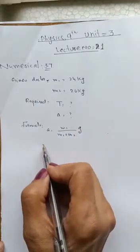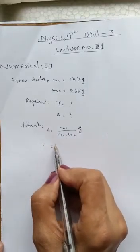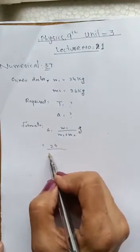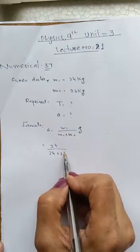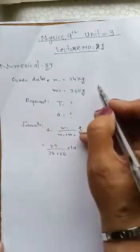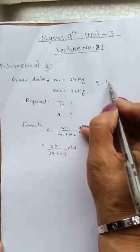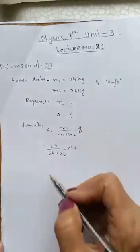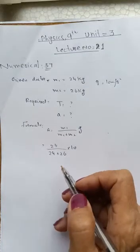Now we have to find values. m1 is 24. Here again, 24 plus 26. The value of g is 10 meters per second square. You can write this as separate. The value of gravity is 10 meters per second square.